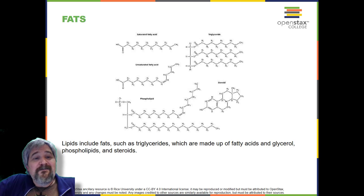The number of carbons in the fatty acid may range from 4 to 36. Most common are those containing 12 to 18 carbons. In a fat molecule, a fatty acid is attached to each of the three oxygen atoms in the hydroxyl groups of the glycerol molecule with a covalent bond. During this covalent bond formation, three water molecules are released. The three fatty acids in the fat may be similar or dissimilar. These fats are also called triglycerides because they have three fatty acids.